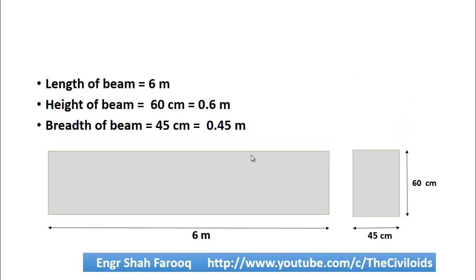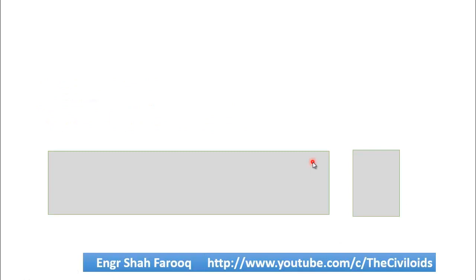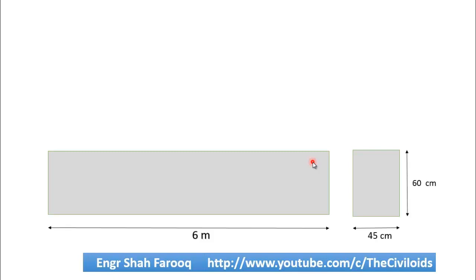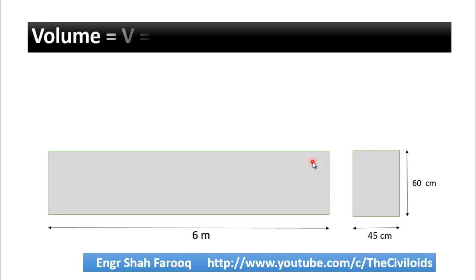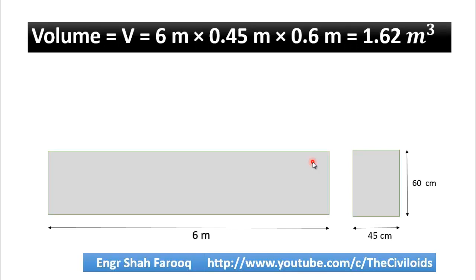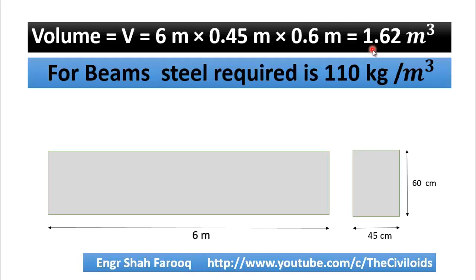To solve this problem, let's take length = 6 meters, height of the beam = 60 cm, which is equal to 0.6 meters, and breadth of the beam = 45 cm. The first thing you need to do is calculate the volume of the structure. Here the structure is a beam, and the volume of the beam equals its length multiplied by its width multiplied by its height. Volume = 6 m × 0.45 m × 0.6 m, which gives a volume of 1.62 meter cube.